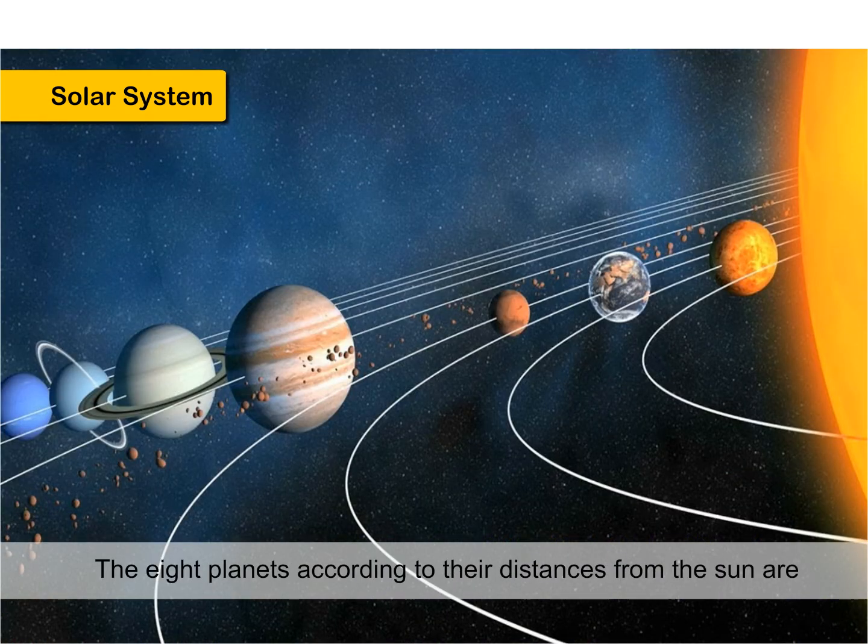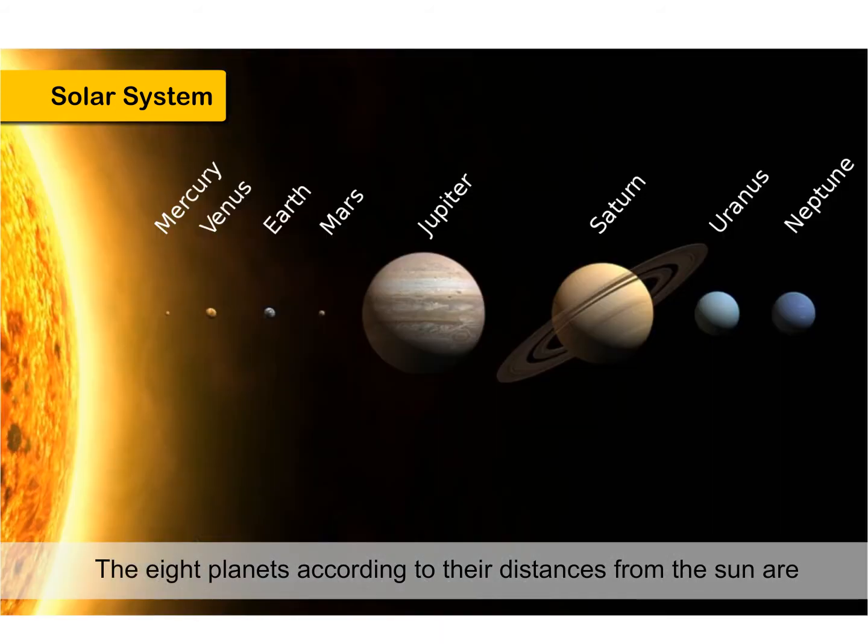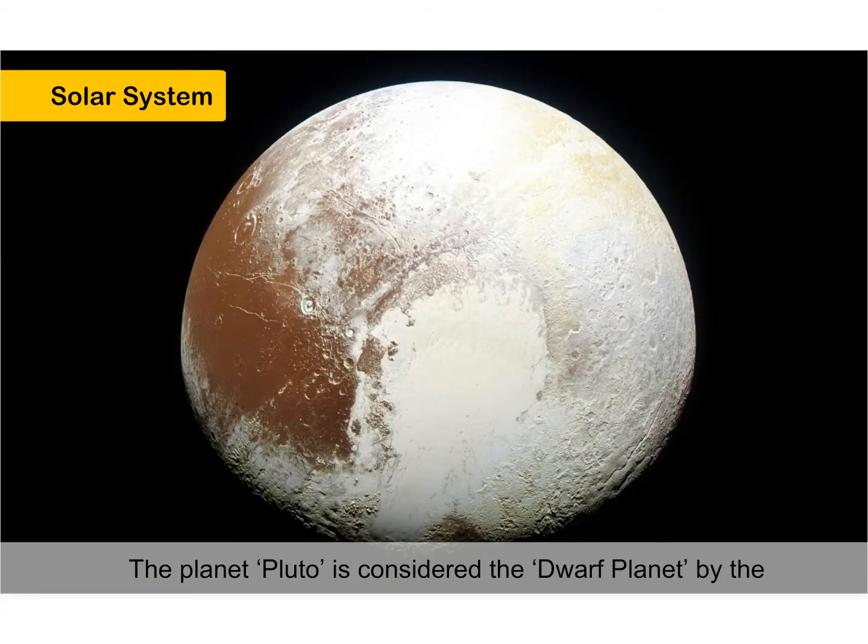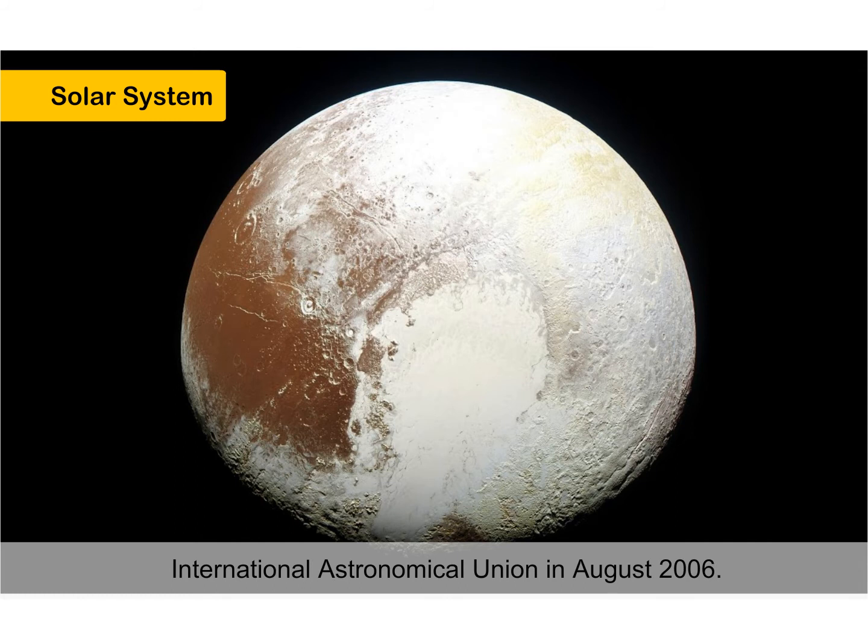The eight planets according to their distances from the sun are Mercury, Venus, Earth, Mars, Jupiter, Saturn, Uranus and Neptune. The planets get their names after Greek and Roman gods and goddesses. The planet Pluto is considered the dwarf planet by the International Astronomical Union in August 2006.